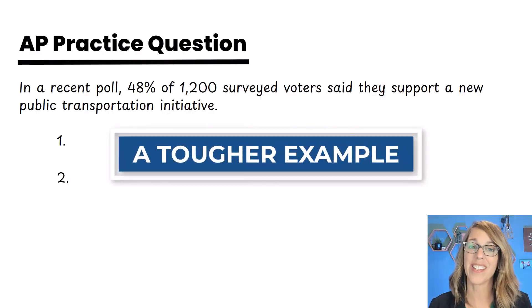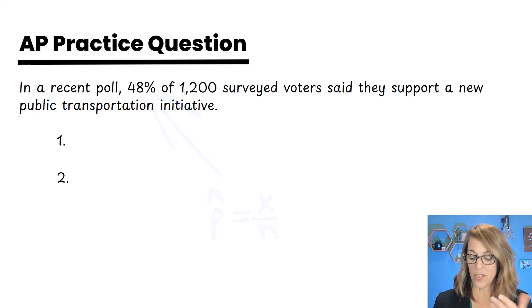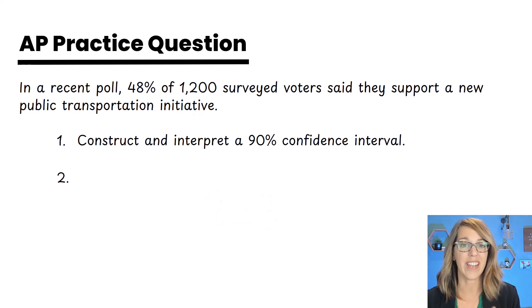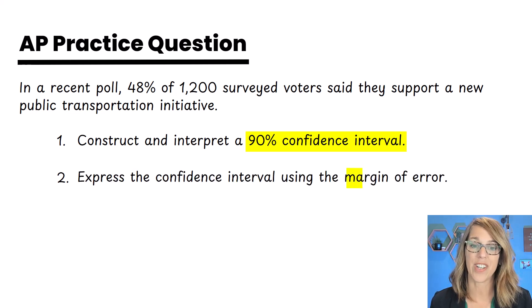As promised this one has a sample percentage, that 48%, instead of a number. So it says that 48% of those 1200 said they support this new initiative. We want to do two things again including the 90% confidence interval this time and the margin of error.